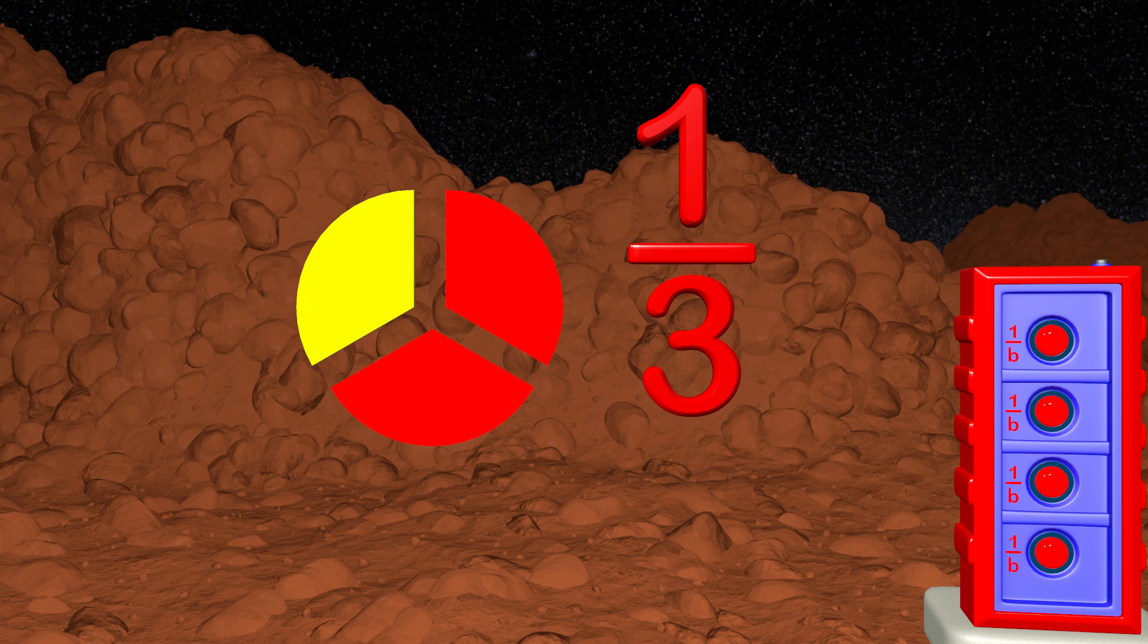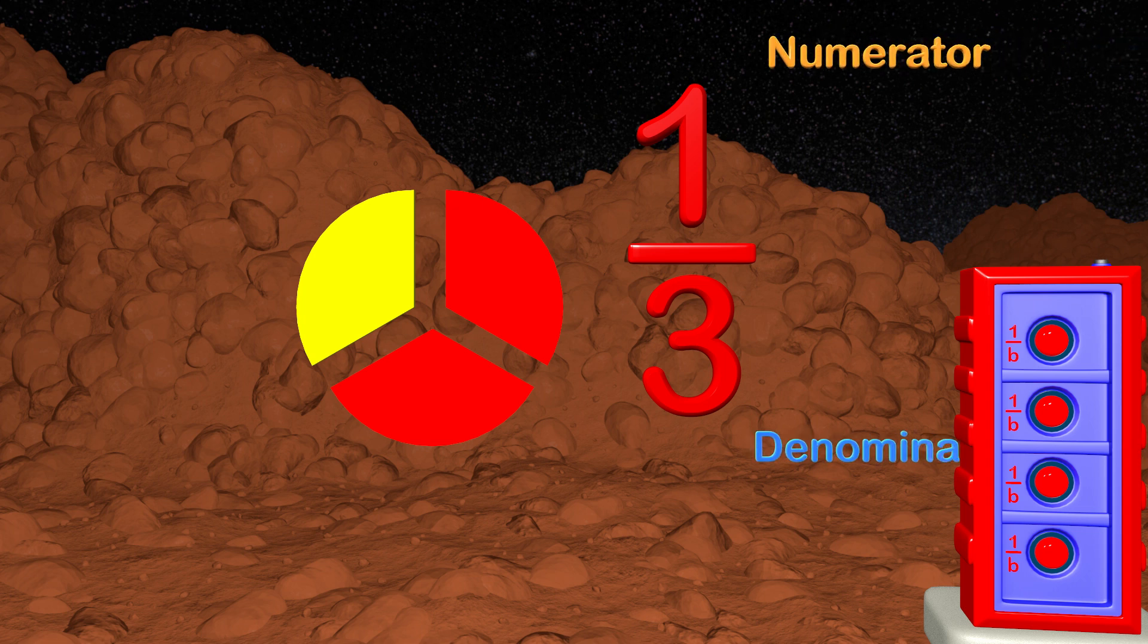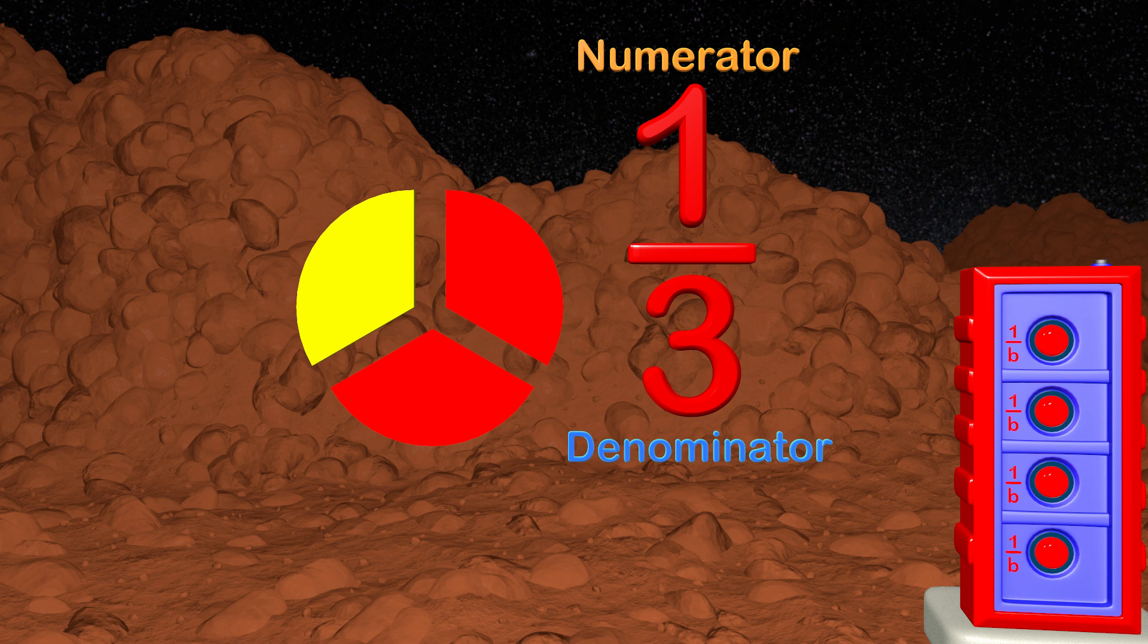We also need to review how a fraction is written. The fraction we see is 1 over 3 or 1 third. The top number is called the numerator and the bottom number is called the denominator. The numerator is a part of the whole circle. The numerator is 1 because there is one yellow part of the whole circle.